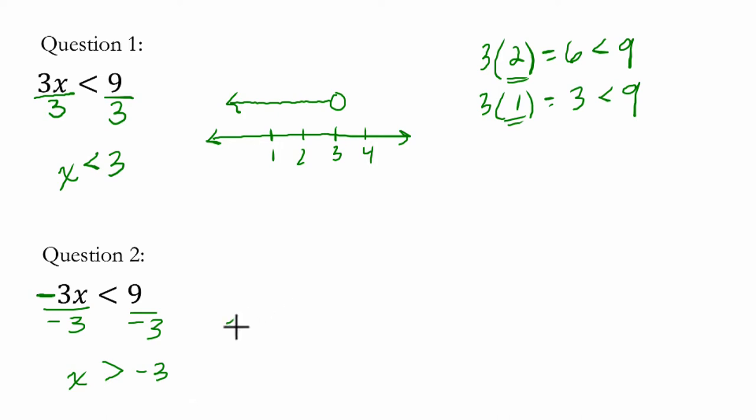And so on the number line, what this is saying, we'll look at a number example and then we'll explain. Let's say we have negative 3 here. So here's negative 2, here's negative 4, and here's negative 1.